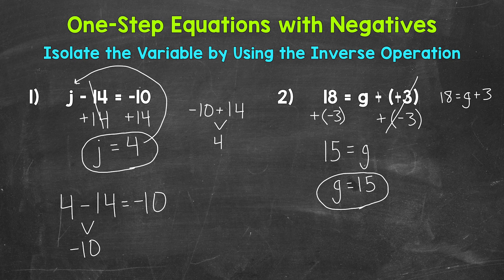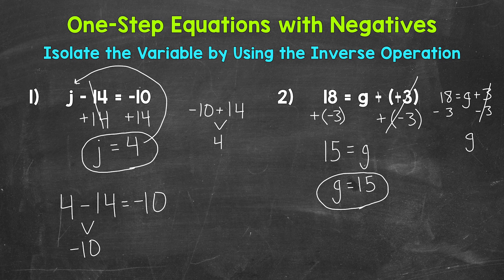Let's go through the rewritten equation and see if we still get 15. We need to isolate G. 3 is being added to G, so let's undo that addition by using the inverse operation, which is subtraction. Let's subtract 3 from the right side of the equation. Whatever we do to one side, we must do to the other, so subtract 3 from the left side as well. On the right side, we are adding 3 and subtracting 3, so these 3s cancel out and G is now isolated. So G equals, and on the left side, 18 minus 3 equals 15. So G equals 15 that way as well.